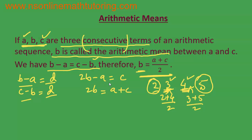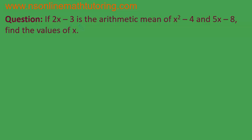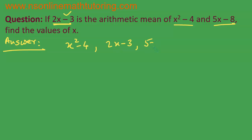This is all about arithmetic means. Now let us solve a question connected to arithmetic means. The question is: if 2x minus 3 is the arithmetic mean of x squared minus 4 and 5x minus 8, find the values of x. Since 2x minus 3 is the arithmetic mean between these two terms, it will be the middle term. So we write x squared minus 4, then 2x minus 3, then 5x minus 8. Both orderings are correct.